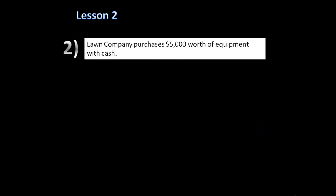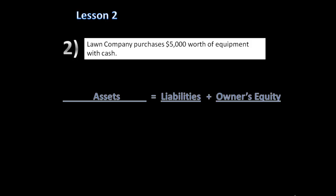In part two, Lawn Company purchases $5,000 worth of equipment with cash. Looking at the accounting equation — assets equal liabilities plus owner's equity — we identify cash and equipment, both of which are assets. So only the left side of the equation will change.